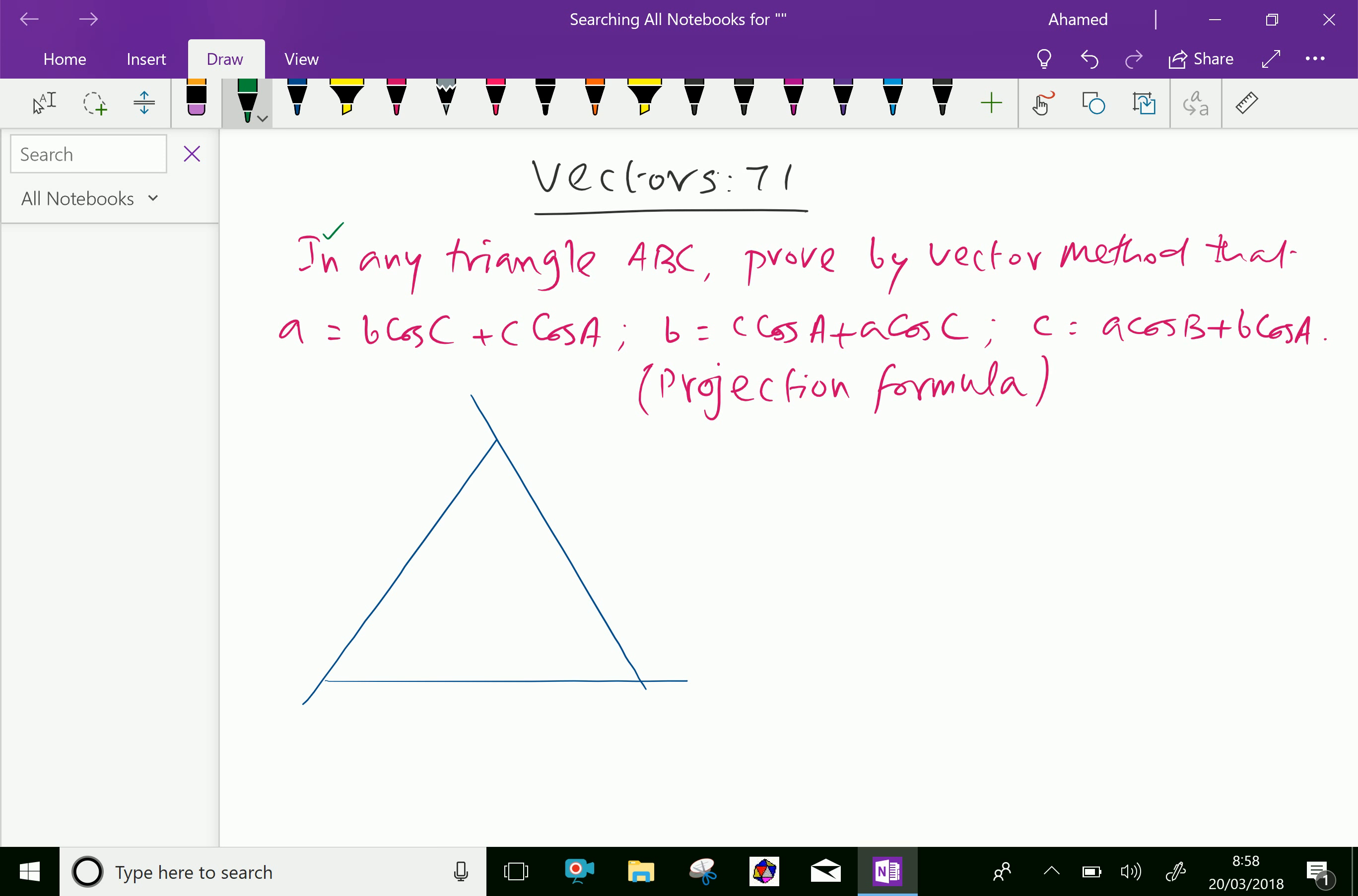In any triangle ABC, prove by vector method that a equals b cos C plus c cos B, b equals c cos A plus a cos C, and c equals a cos B plus b cos A. That is projection formula.